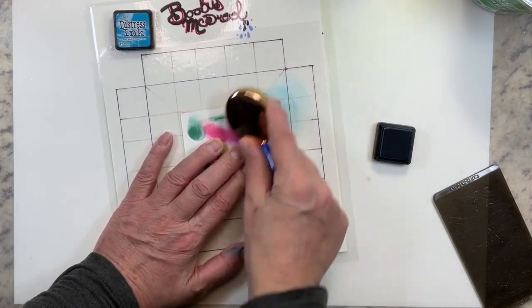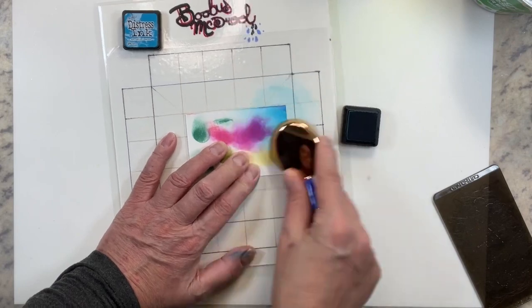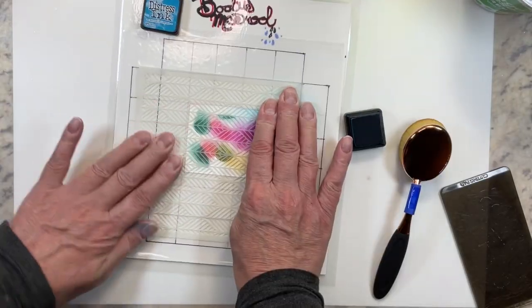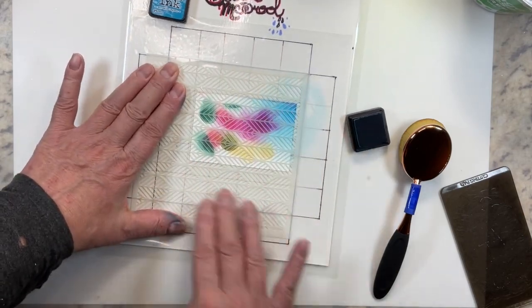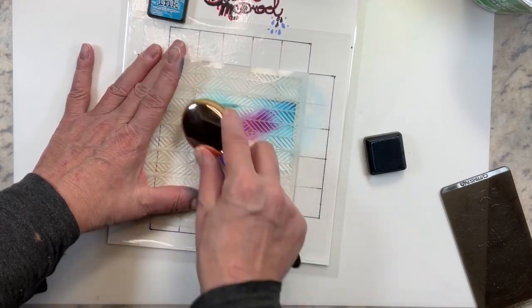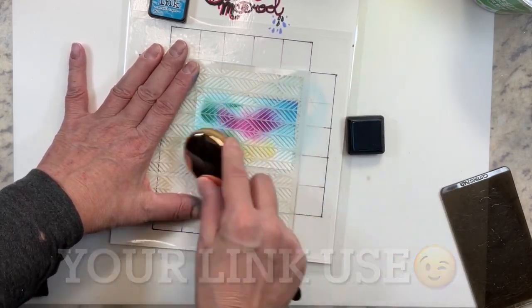You can go ahead and stick your paper to it and do your regular ink blending, get your ink on it. This is not going to seep through, it's not going to damage your mat underneath. You can use your gorgeous Gina K stencils. Isn't this one amazing? I love it so much. Of course I've got links to it down below.